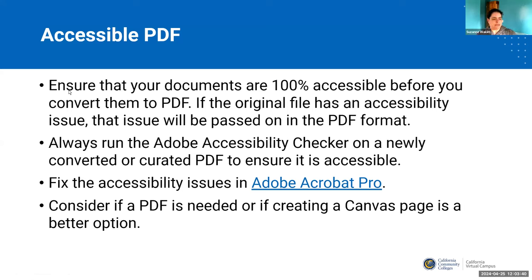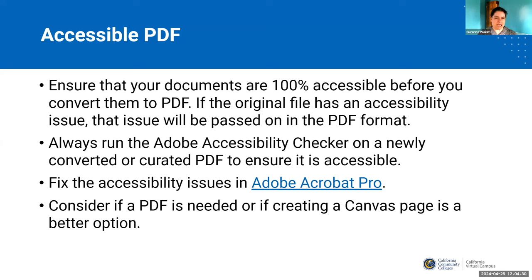PDFs are quite problematic, and you want to ask yourself if you need them. But there are times where you may need them, and so we wanted to make sure to cover how to make them accessible. The place to begin is when you create the document — you're generally not going to create it in Adobe. You're going to create it in Word or PowerPoint and then transfer it over as a PDF. The first step is to make sure the original document is accessible: run the accessibility checker, fix any issues, double-check everything, and then convert it to a PDF. Because any accessibility issues in the original document are going to carry over. But even if your original document is accessible, when you transition over to PDF, new accessibility issues may come to the surface — any time you move from one modality to another, accessibility issues can come in.